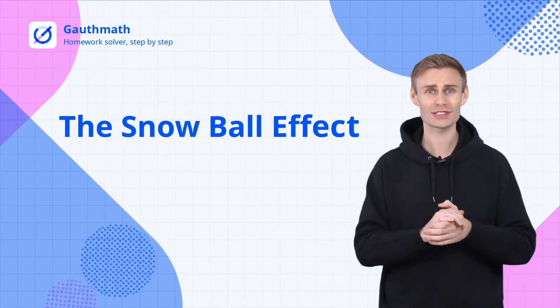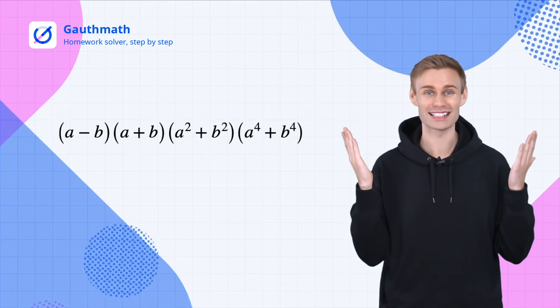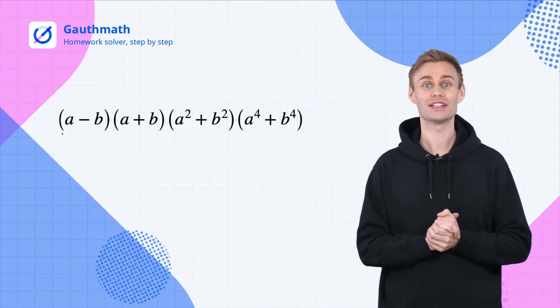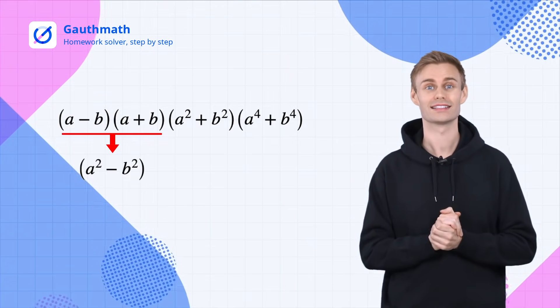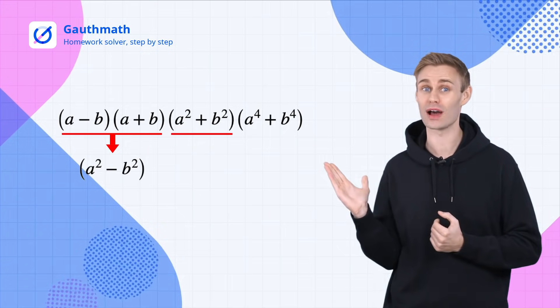Then what's the snowball effect? Let's have a look at this expression. We could get A squared minus B squared from these two factors. The third factor is A squared plus B squared.